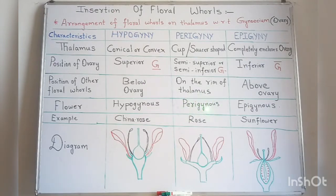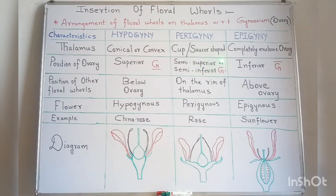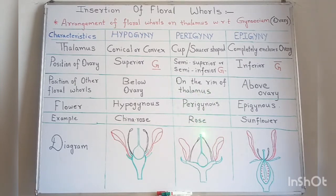A perigynous flower is one in which the ovary is neither superior nor inferior — or we can say it is semi-superior or semi-inferior — and the other floral whorls, that is calyx, corolla, and androecium, are arranged on the rim of the thalamus. The example of a perigynous flower is rose. In the diagram, this is the position of the ovary and this is the cup or saucer-shaped thalamus, with the other floral whorls arranged on its rim.